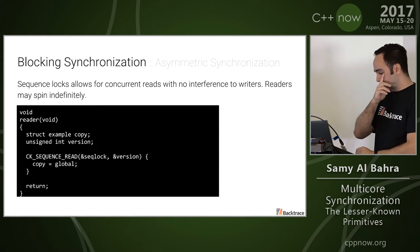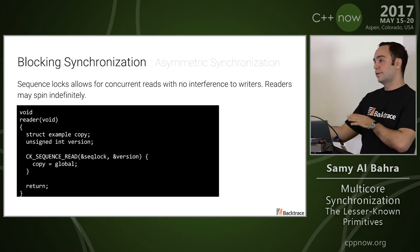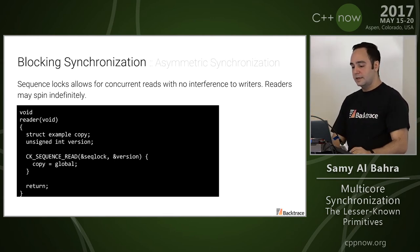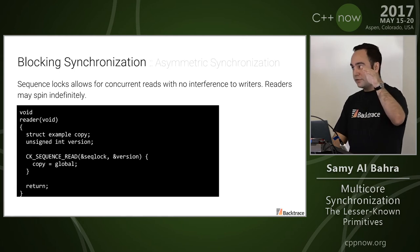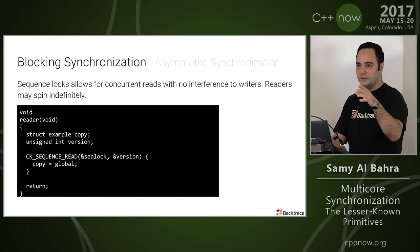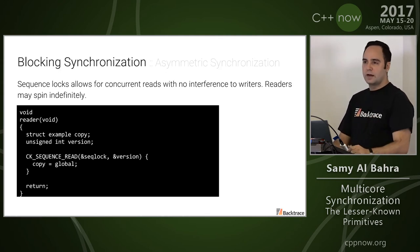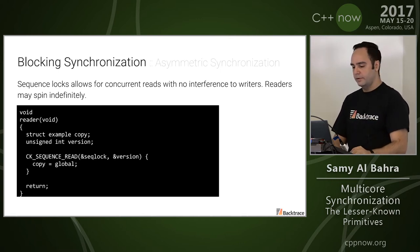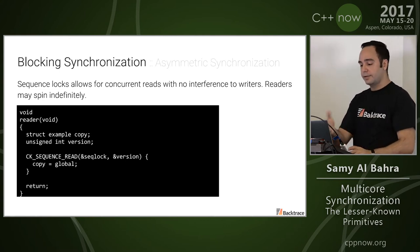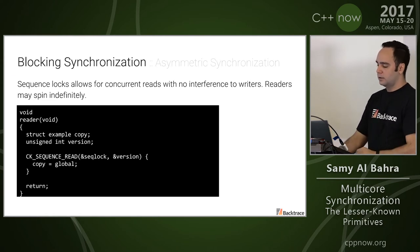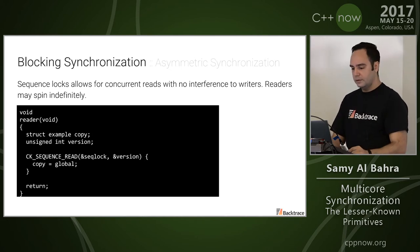Another very interesting primitive is sequence locks. As far as biasing is concerned, this is extremely write-biased — readers can spin indefinitely. On the read side, all you do is read a version counter, load fence, do a deep copy of a relevant data structure, then read the version counter again — if it hasn't changed, you are good to go. If there is an active write, you block and wait for that write to complete. On the write side, all you do is increment a counter twice — depending on your implementation, that's simply two store operations, so it's extremely cheap on the write side. This construct is heavily used in the Linux kernel.